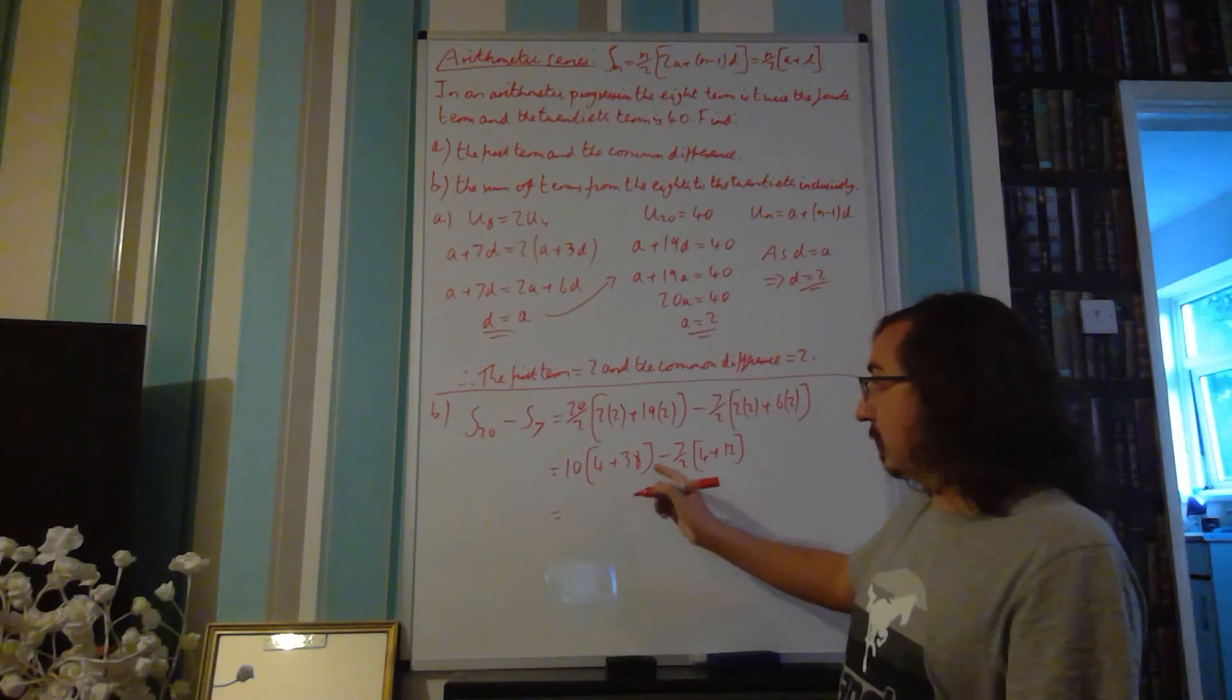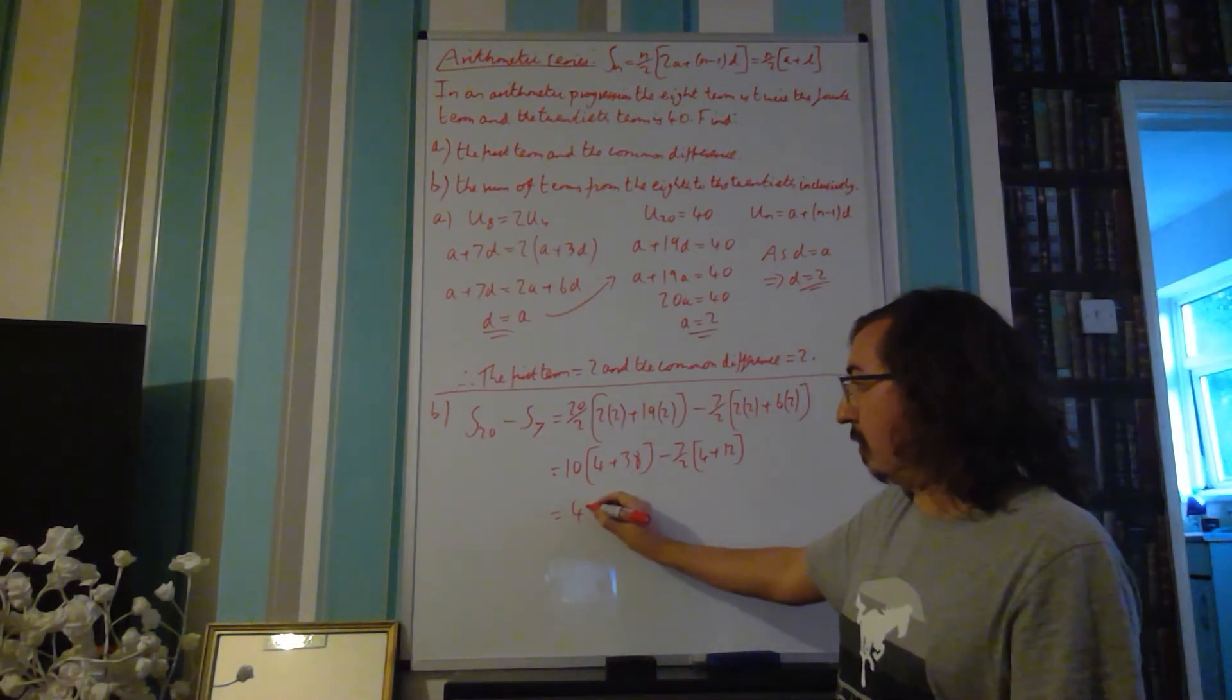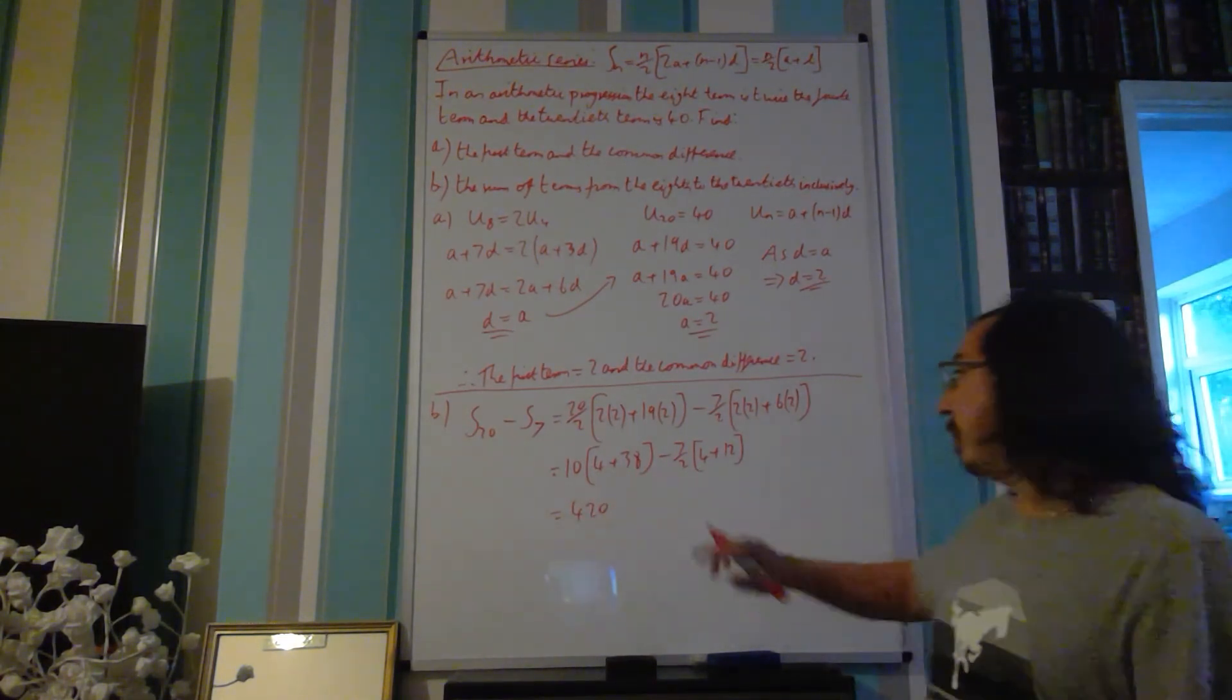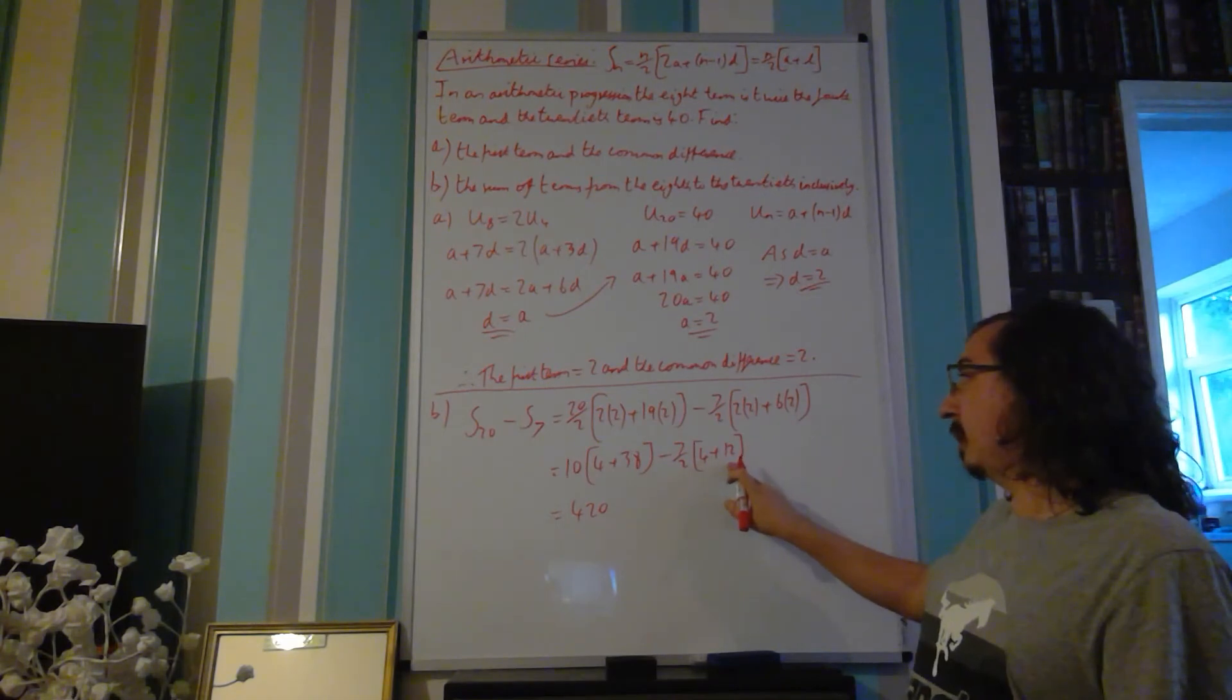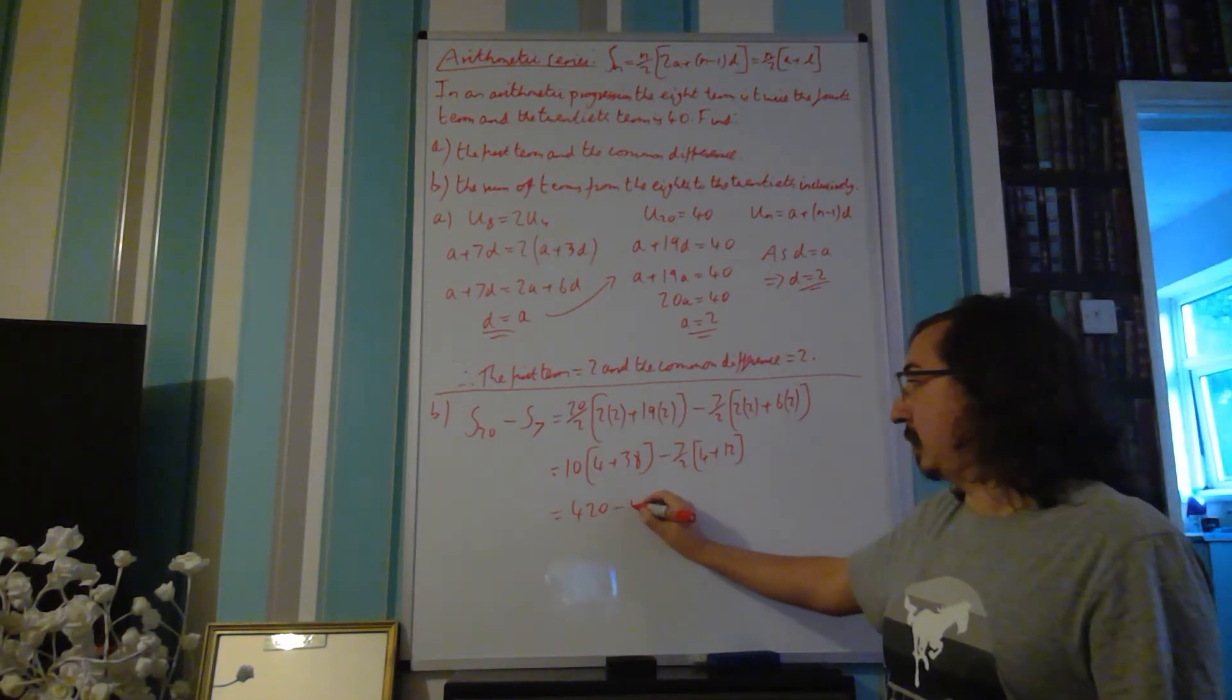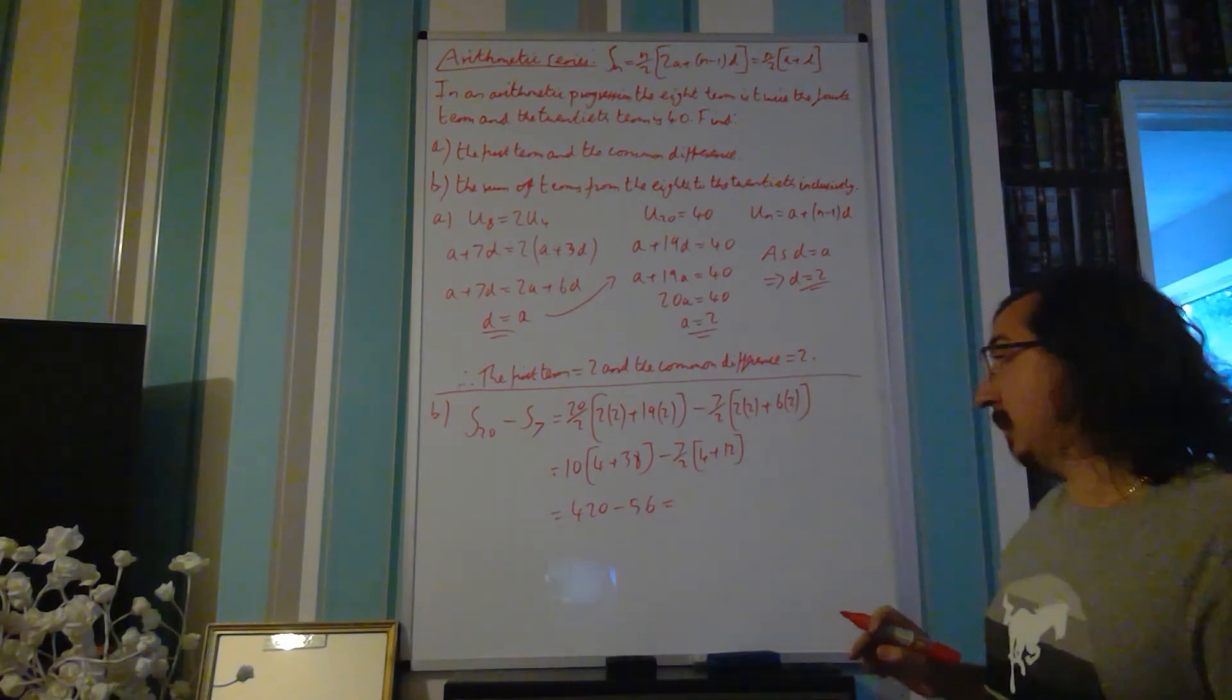4 plus 38, 42, times 10, 420. 4 plus 12 is 16, times a half is 8, times 7 is minus 56.